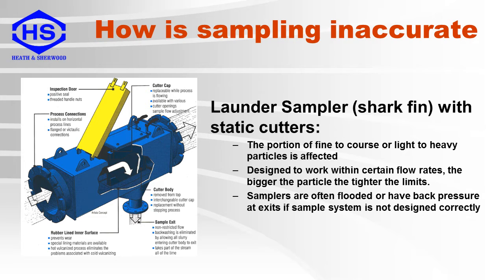This is an example of a launder sampler with static cutters where sampling can be inaccurate. Again, the proportion of fine to coarse or light to heavy particles going into the cutter is affected. These samplers are designed to work within certain flow rates — the bigger the particle, the tighter the limits. These samplers are often flooded or have back pressure at exits if the sampling system is not designed properly.